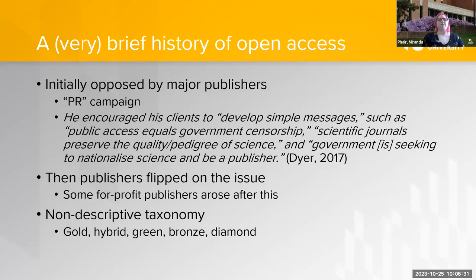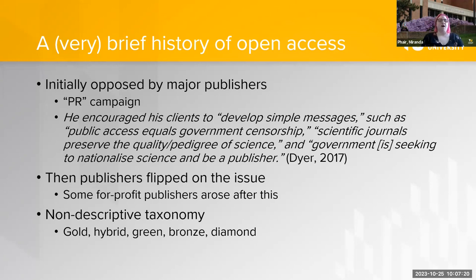This initially bothered the major publishers a lot because that's how they make their money. They launched a PR campaign — they hired someone who worked with celebrities on image — saying things like 'public access equals government censorship' and that subscriptions were needed to preserve the quality of science. It didn't work well, and eventually publishers completely flipped their stance because they realized they could make money off open access — that's where we get APCs. For-profit publishers like Frontiers arose after this and were always open access but always charging APCs.